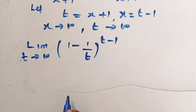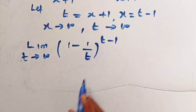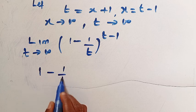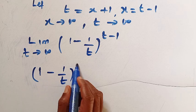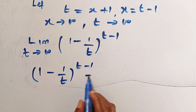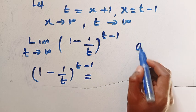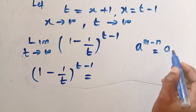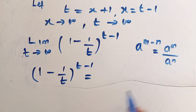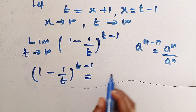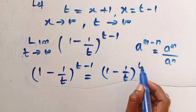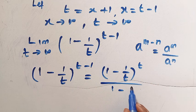In the second step, let's break this down further. If I have 1 minus 1 divided by t, raised to the power t minus 1, using the exponent rule — a raised to the power m minus n equals a to the m divided by a to the n — we get 1 minus 1 divided by t, all raised to the power t, over 1 minus 1 divided by t.